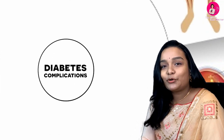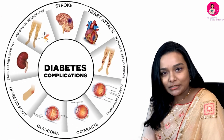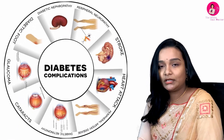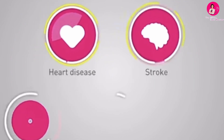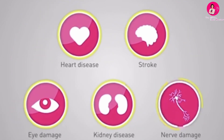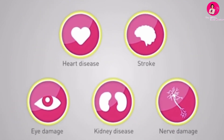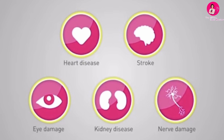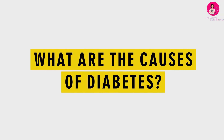It is important to discuss diabetes as it can cause serious health complications including cardiovascular disease like stroke and heart attacks, blindness, kidney failure and lower extremity amputations. What are the possible causes of diabetes?